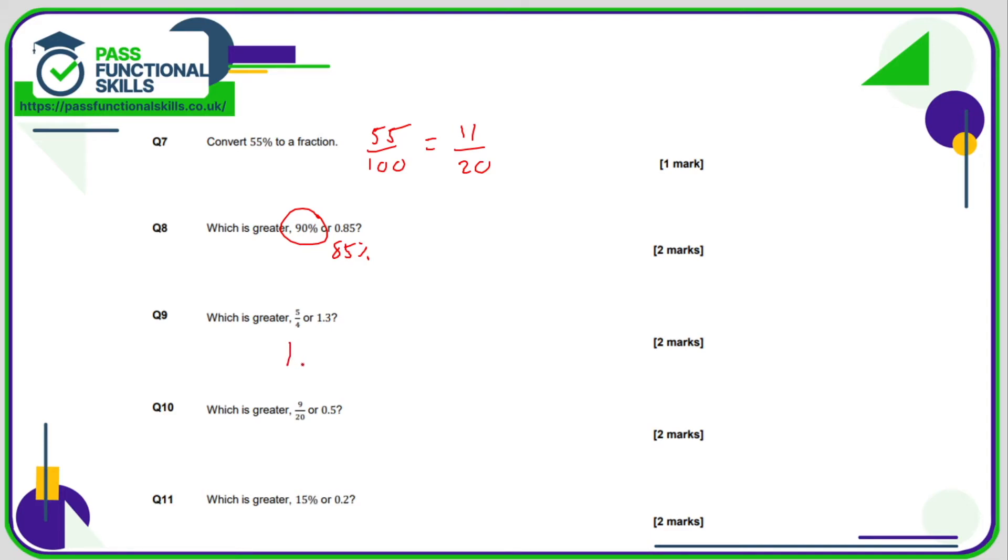So one and one-quarter. So five divided by four is one with one remaining. Now one-quarter, hopefully you know that a quarter is 0.25 as a decimal, so one and a quarter is 1.25.